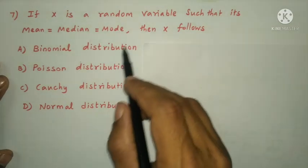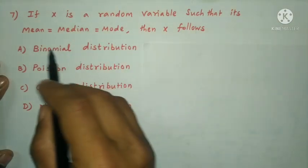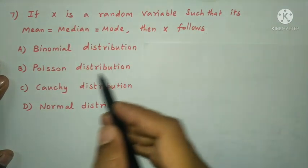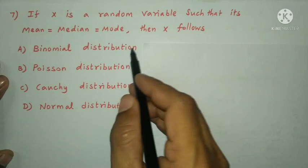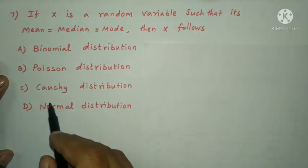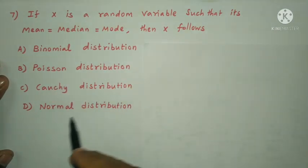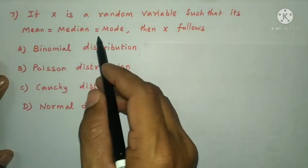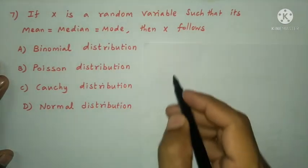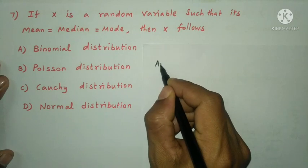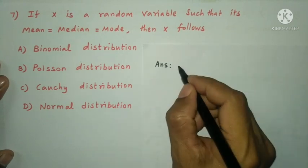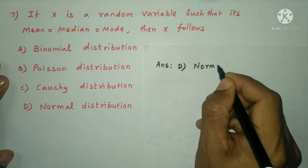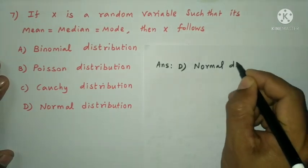Next question: if X is a random variable such that mean = median = mode, then X follows binomial, Poisson, Cauchy, or normal distribution? When mean = median = mode, the distribution is symmetric, and that corresponds to normal distribution. The answer is option D, normal distribution.